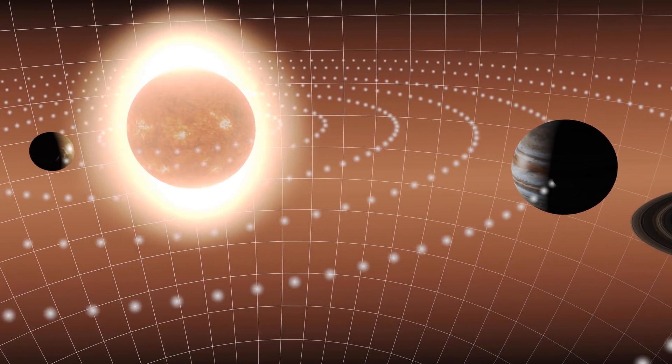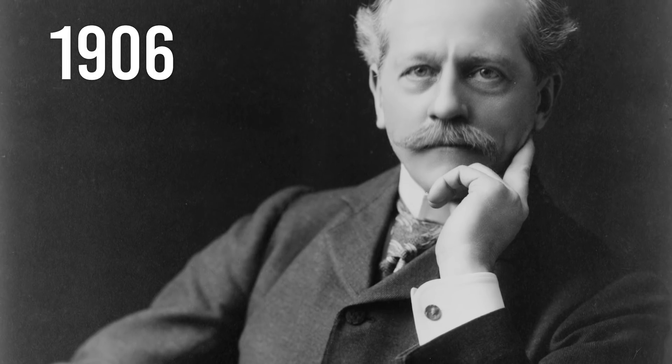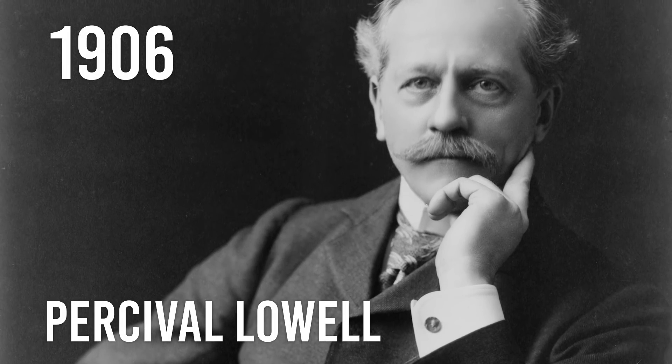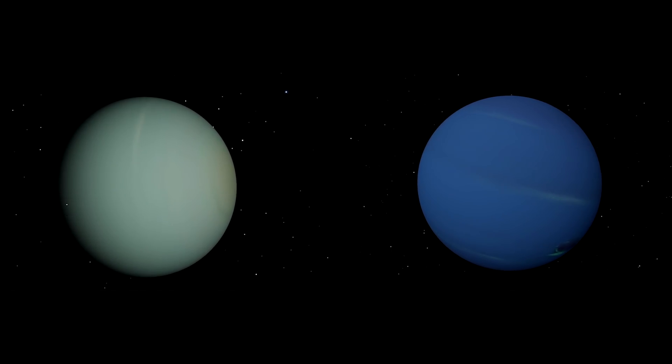The idea that there is a ninth planet in our solar system is nothing new. Since 1906, the astronomer Percival Lowell proposed the idea that beyond the orbits of Neptune, there was a ninth planet that disturbed the orbits of the gas giants Uranus and Neptune, which he called Planet X.